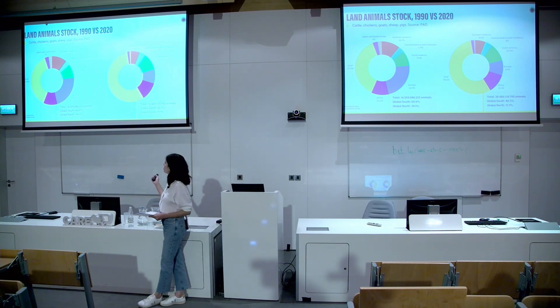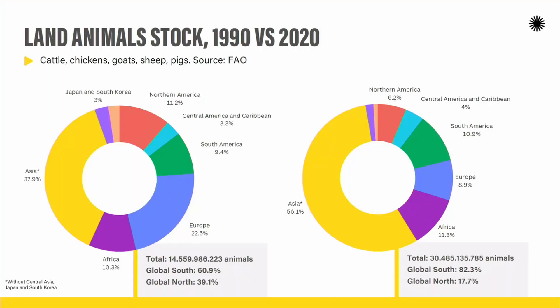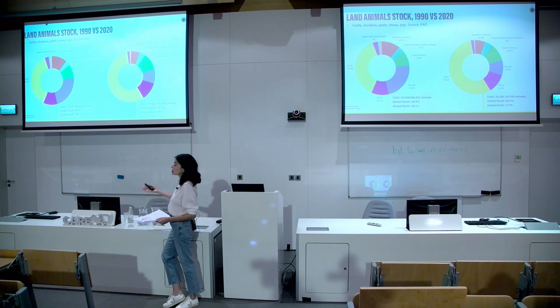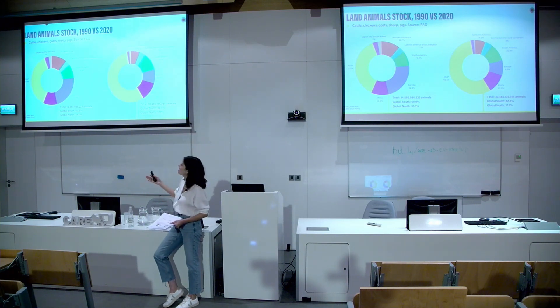So the conclusions from this: most animals exploited for food are currently living in the Global South. And although some Global South countries still have more extensive, subsistence-level animal use, the increase in numbers is driven by farmed animals in factory farms and intensive contexts. The animal welfare issues we were seeing in Europe and North America are now growing in Global South countries as well.